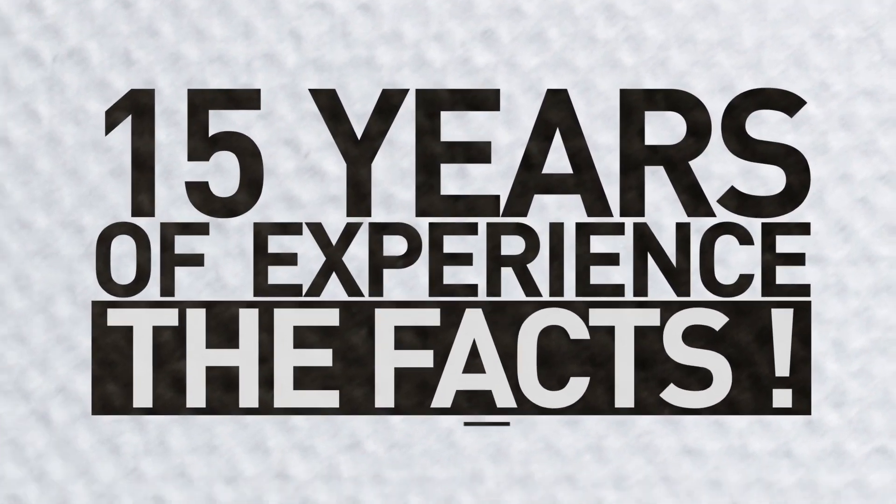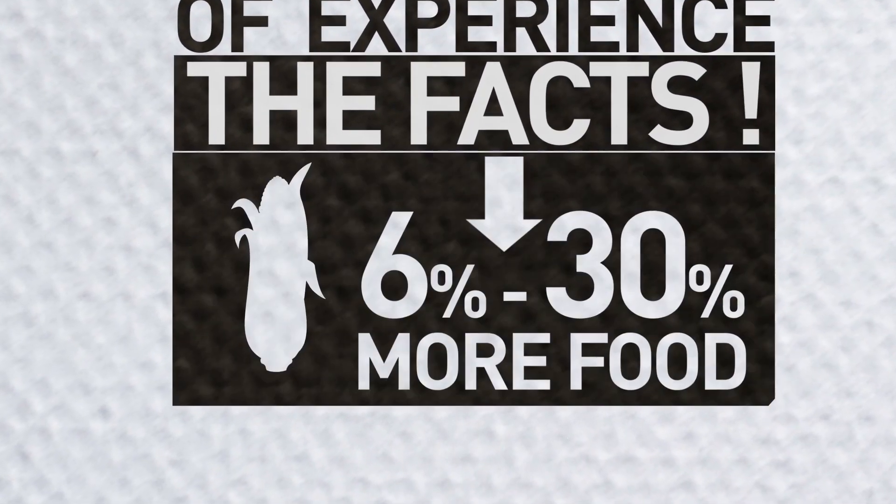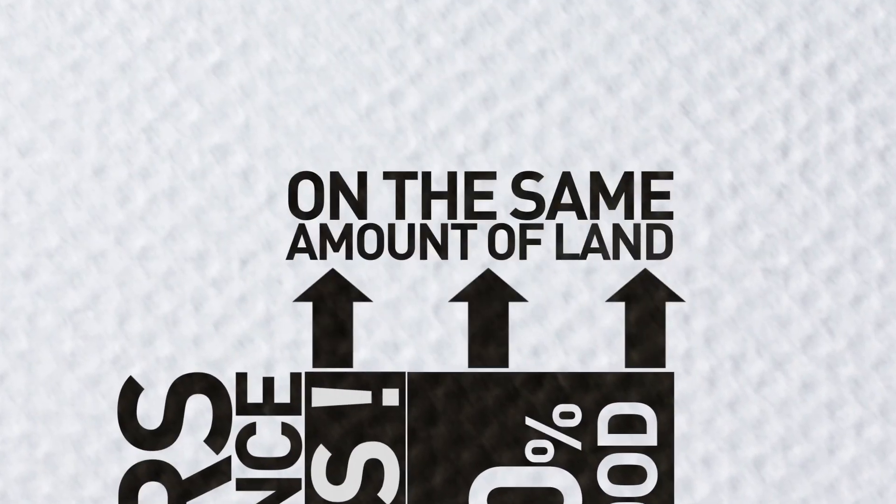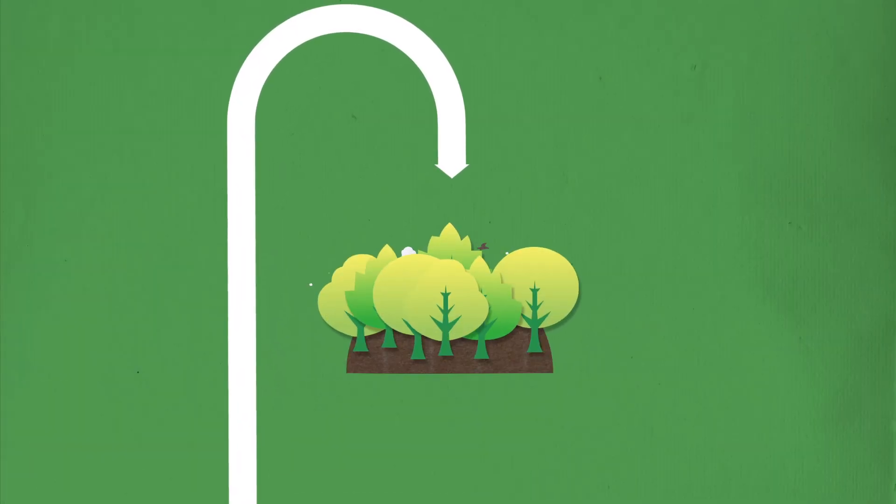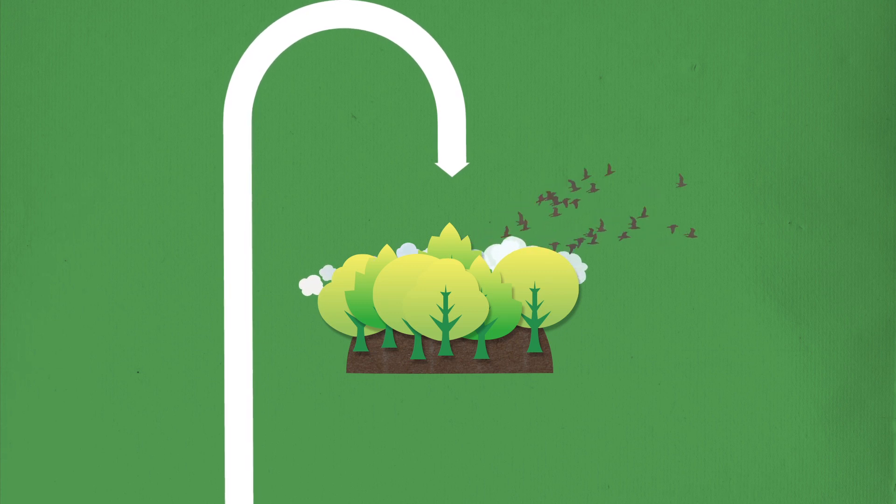With GM crops, 15 years of experience shows that 6 to 30% more food can be grown on the same amount of land. This means there's more land for wild plants and animals to flourish, too.